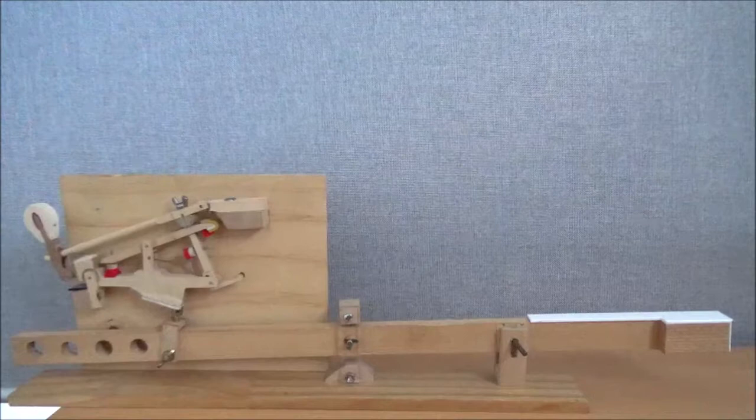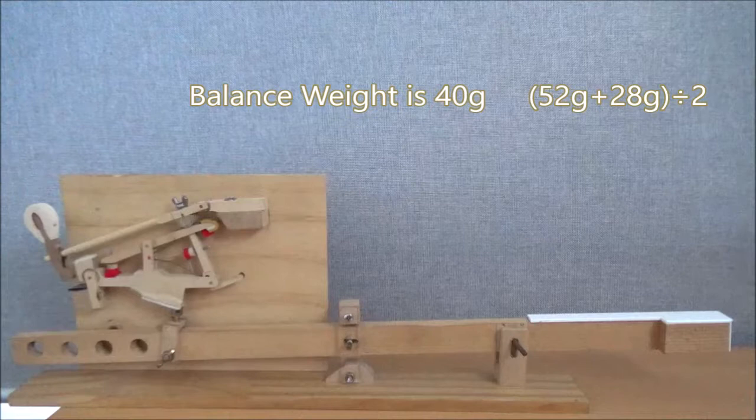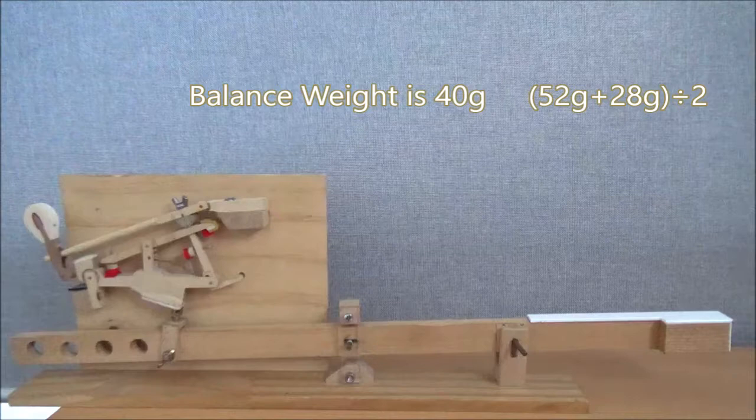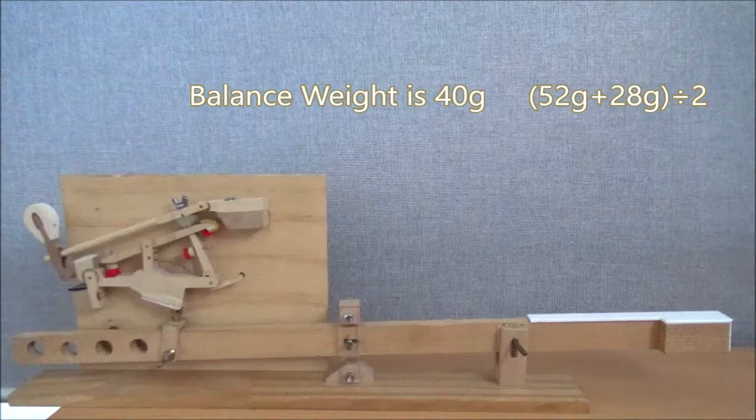Maybe try 29 grams. With 29 grams, the hammer doesn't go back to the rest position, so we may say the up weight was 28 grams. So down weight 52, up weight 28, this action has 40 grams of balance weight. So we found out now the balance weight of this action.